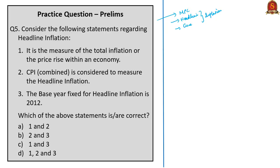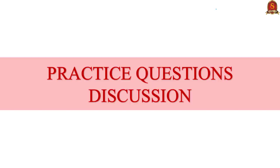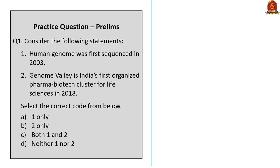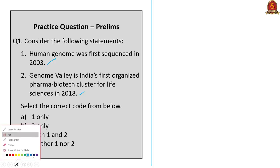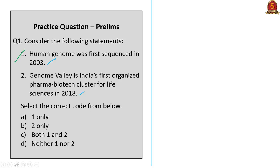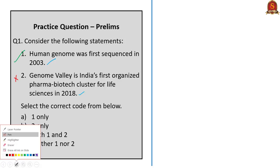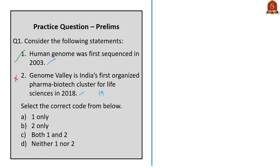With this, we come to the end of today's analysis. Let us move on to the practice questions discussion session. For the first question: Statement 1 is correct — the first genome was successfully sequenced after the completion of the Human Genome Project in 2003. Statement 2 is incorrect — Genome Valley was established in 1999 in Hyderabad. So the correct answer is option A, one only.